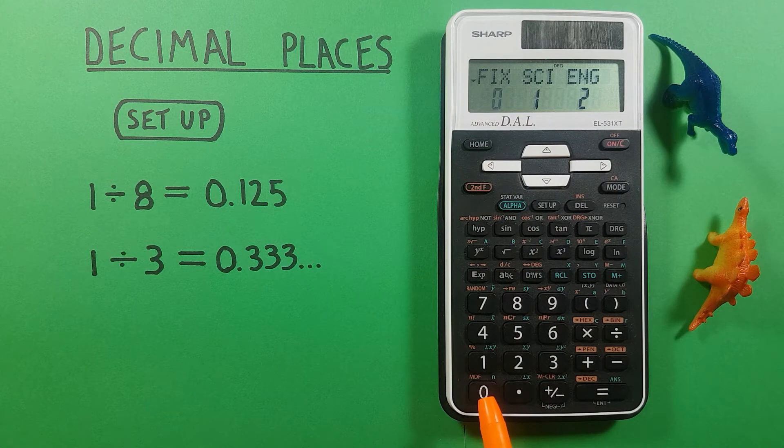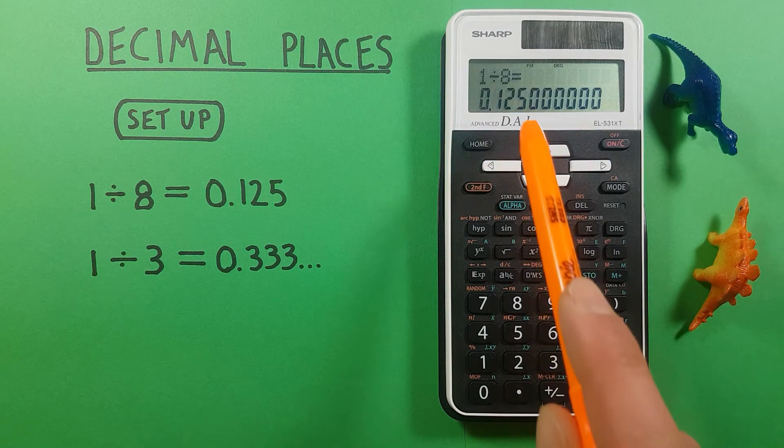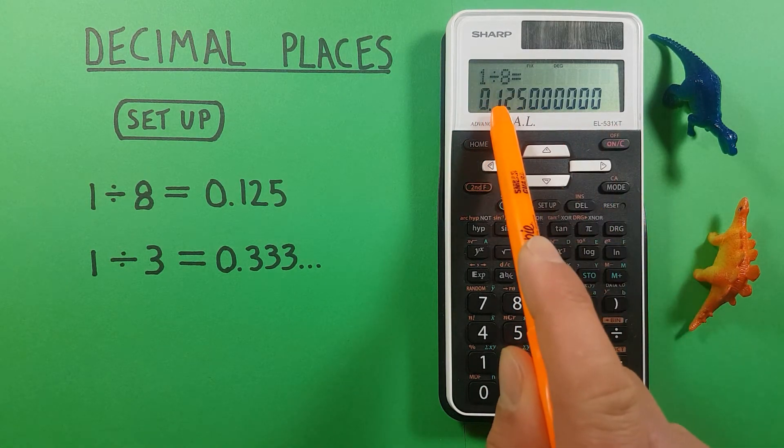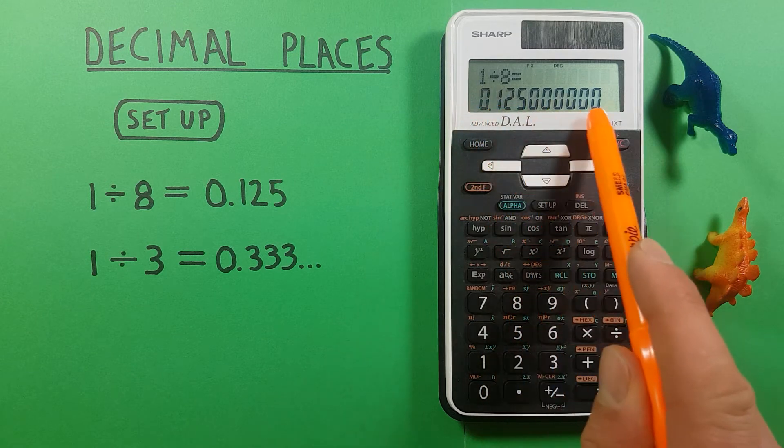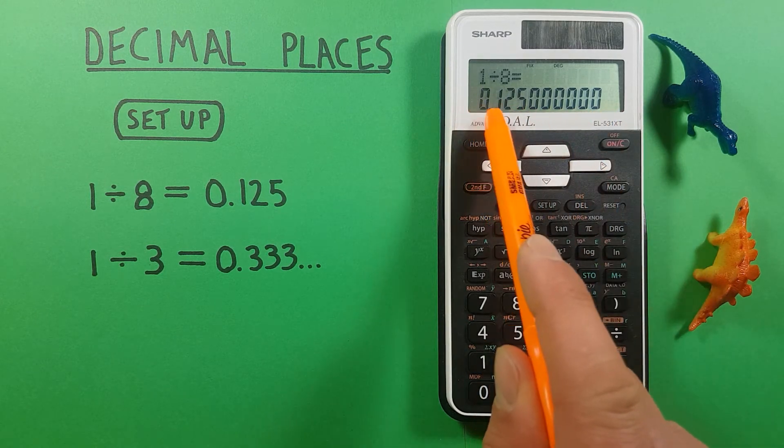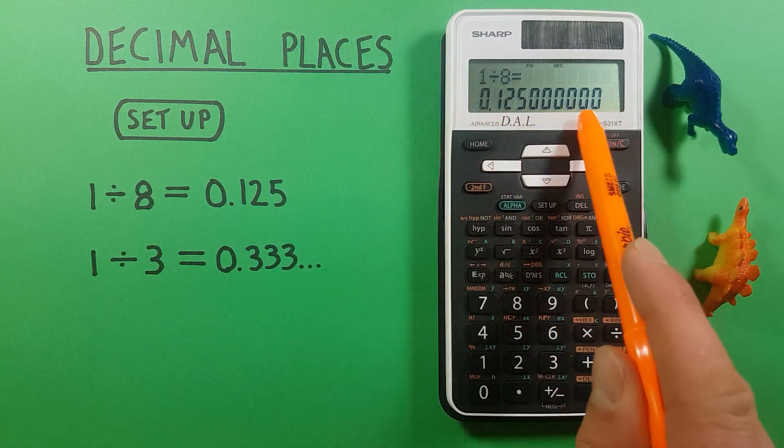So we press 0 again and this will spit us back out to our main screen and we'll see a certain number of decimals displayed. You might see a different number on your calculator at this stage.